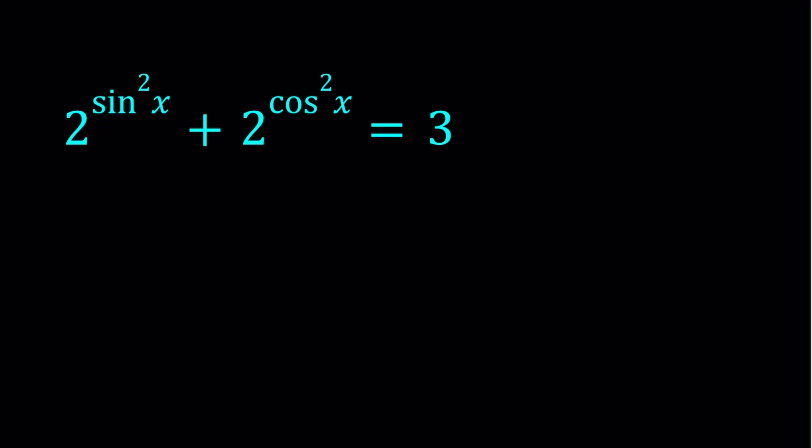Something like this. So we have 2 to the power sine squared x plus 2 to the power cosine squared x is equal to 3. These types of questions are fairly common. You've probably seen them somewhere else with the same number or different numbers. They're competition level problems or maybe some Olympiad level problems, but they're fairly easy to solve.